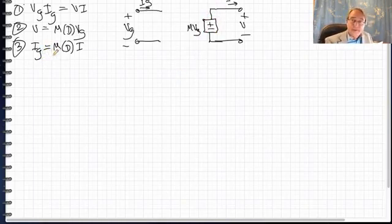The third equation we could similarly model with a dependent source. The current IG is equal to this gain M times the current I. So I could write a dependent current source that produces IG and label its value M times I. So this is one possible equivalent circuit that models the important low frequency or DC voltages and currents at the terminals of the converter.